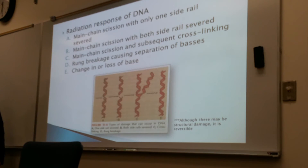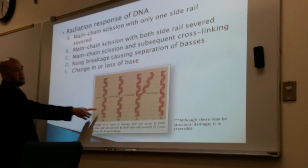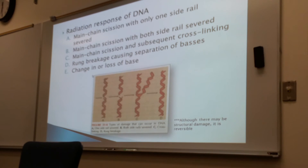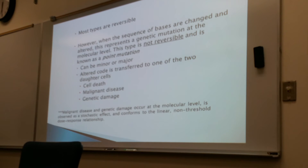Radiation response of DNA: main chain scission where only one side rail is severed (A), main chain scission where both side rails are severed (B), main chain scission with subsequent cross-linking (C), and rung breakage causing separation of the bases (D). Point mutations are a change in or loss of the base. Most types are reversible; however, when the sequence of the bases is changed and altered, this represents a genetic mutation at a molecular level — this is not reversible, and is called a point mutation.